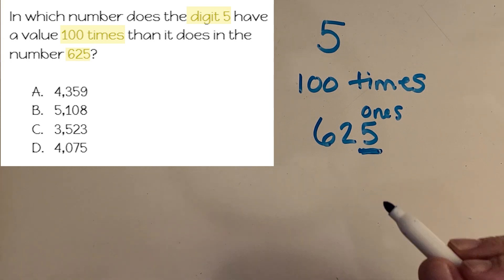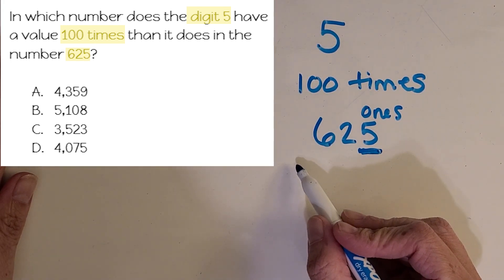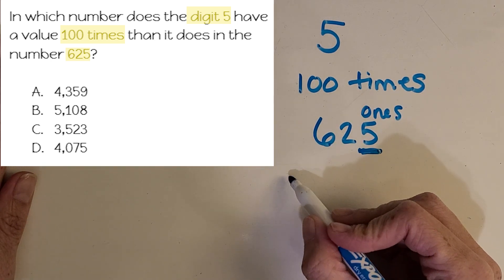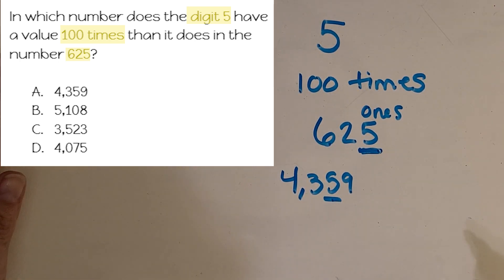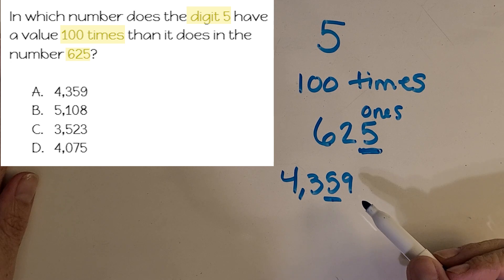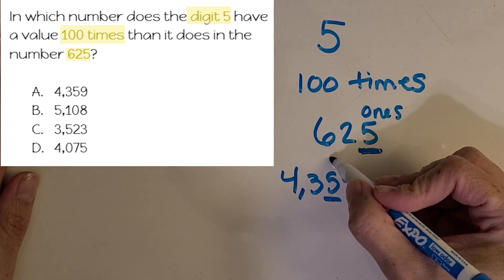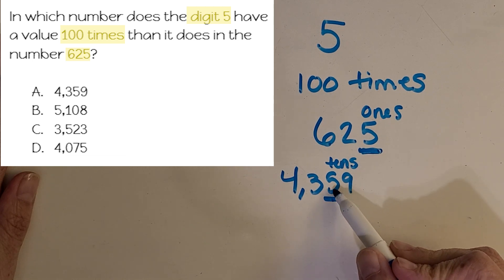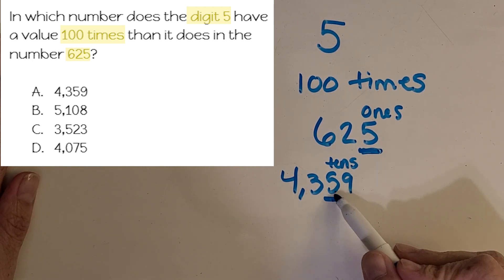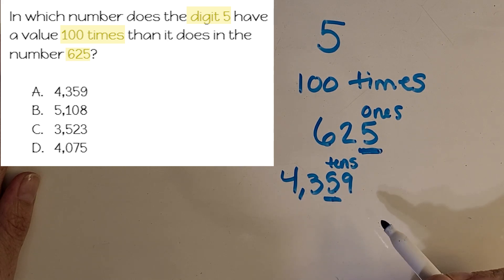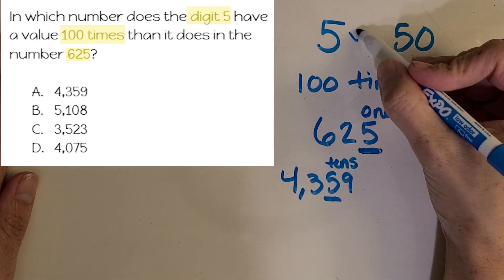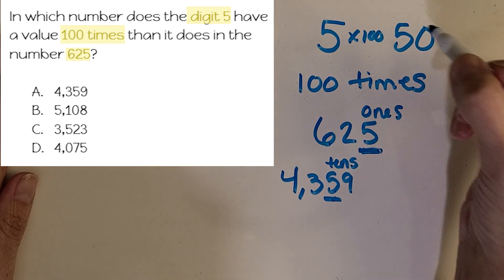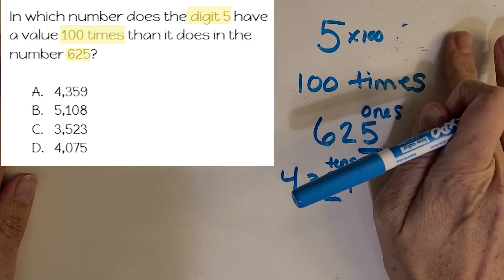Now let's look at the answer choices and understand what they all mean. The first one, A, is 4,359. Let's underline that 5 and study it. It'd be a good idea to underline all of the 5s and study them. What place is that 5 in? It's in the tens. So how much is it worth? 5 tens is worth 50. Is 5 and 50 a 100 times relationship? No, it is not. So let's get rid of that choice.